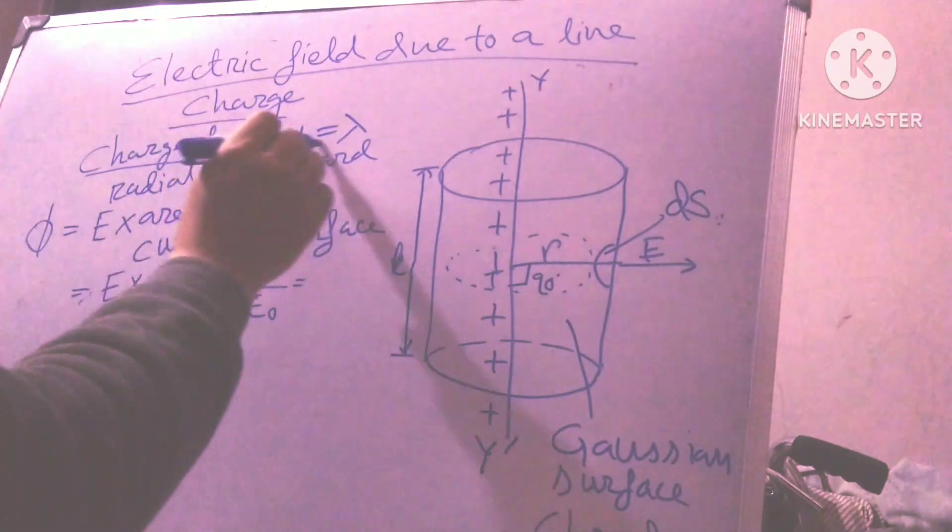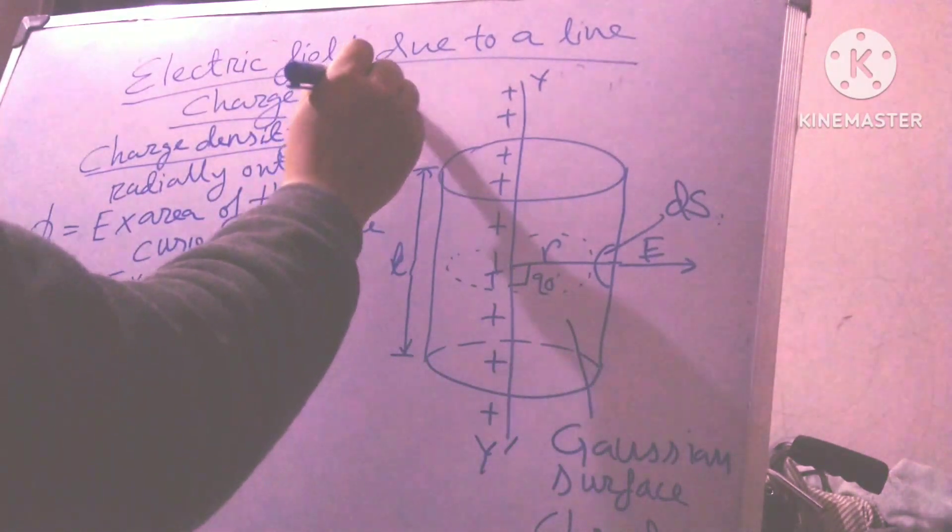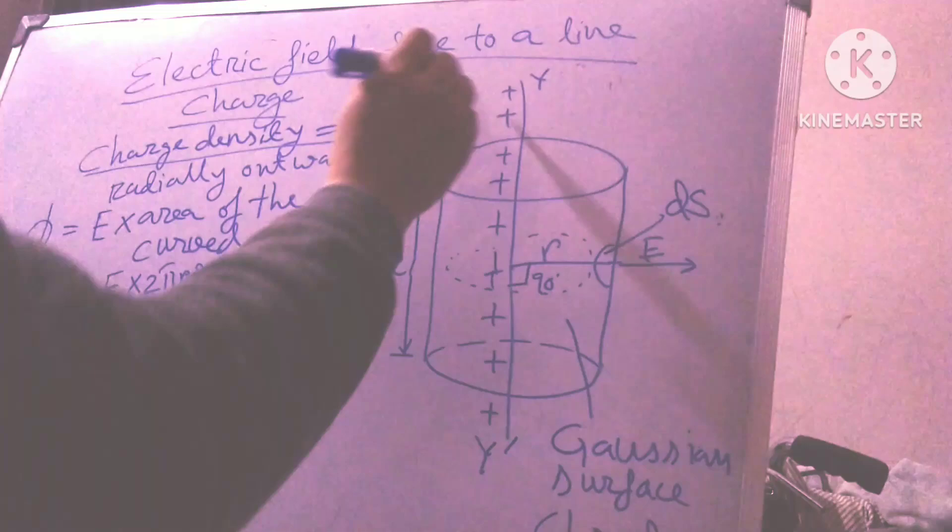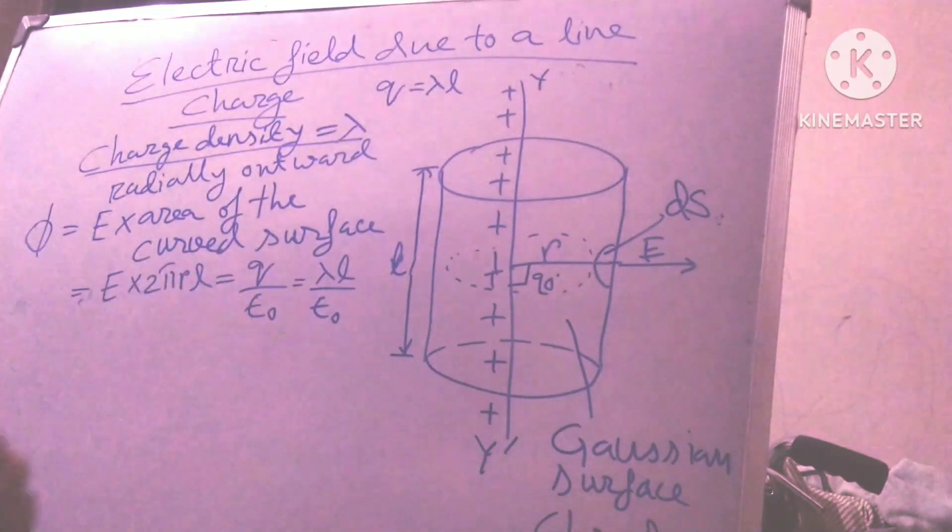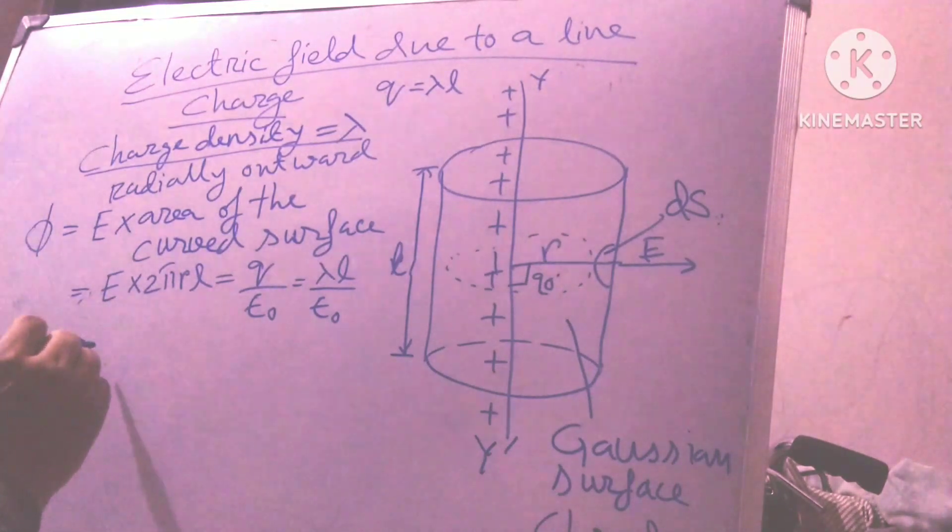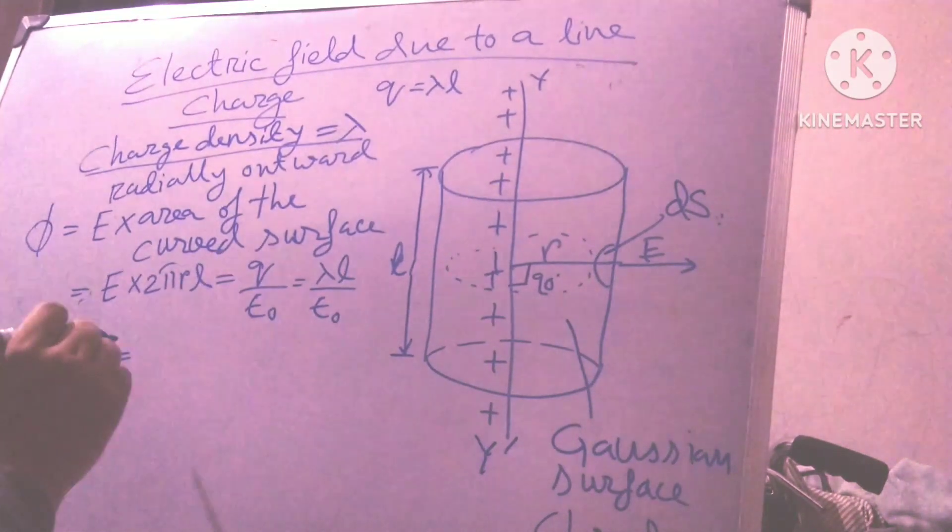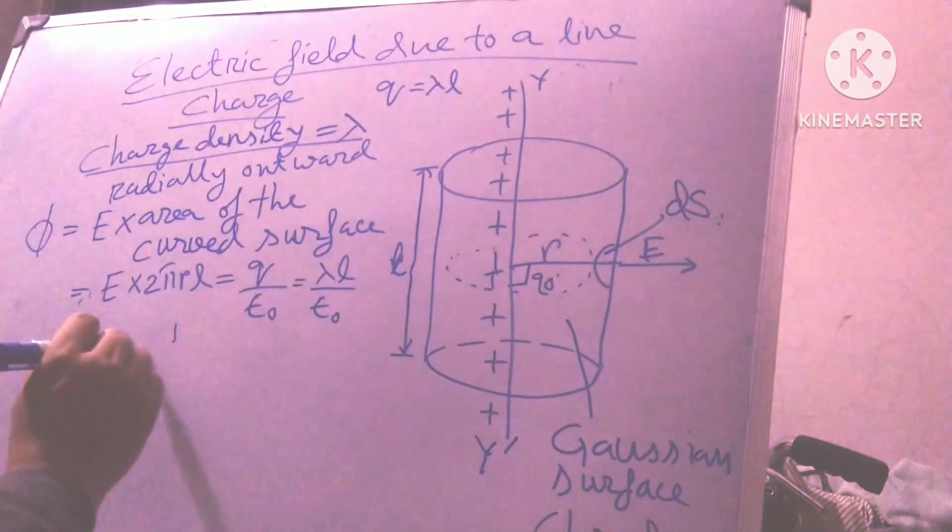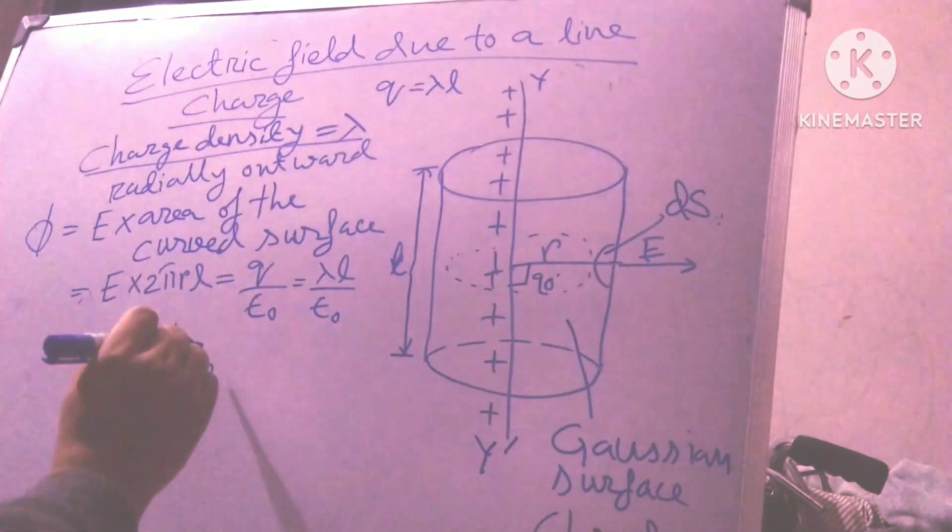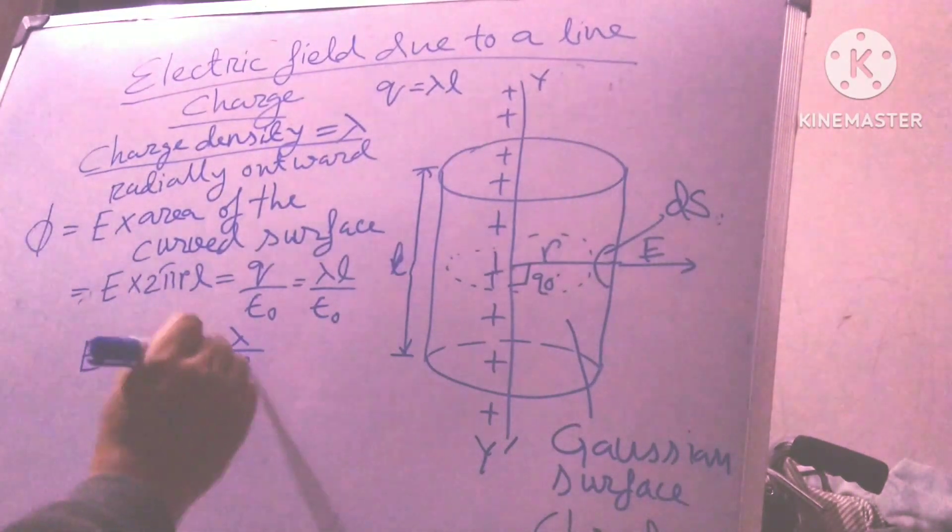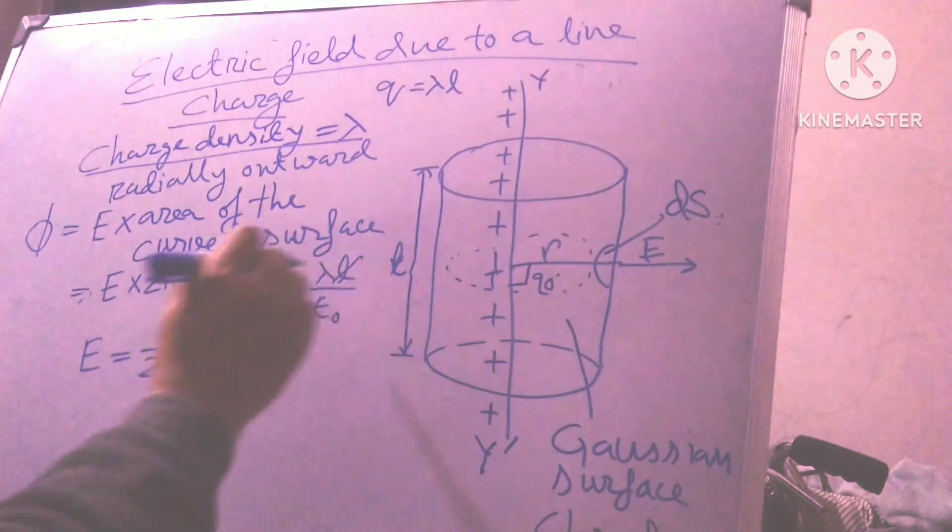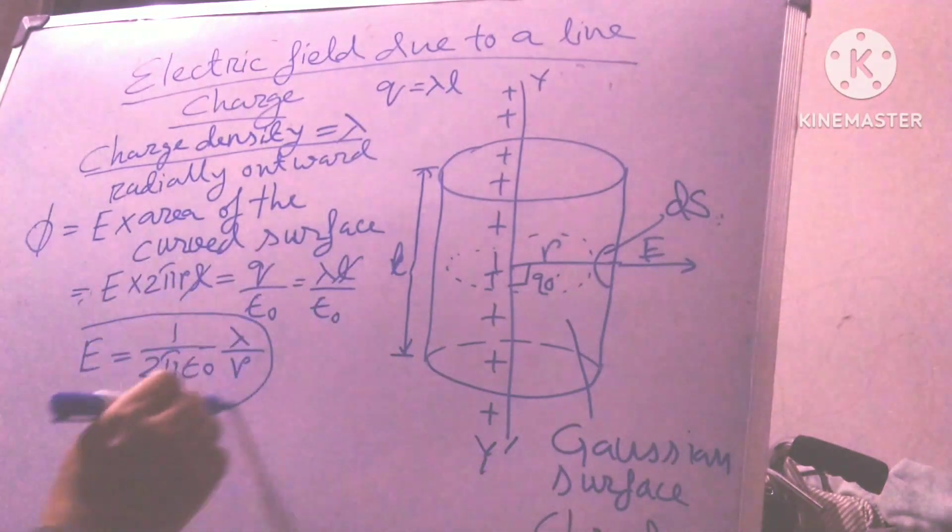So total q is equal to lambda l. So lambda l divided by epsilon 0. And phi is equal to, so we get E equals to 1 by 2 pi epsilon 0 lambda divided by r. So simple calculation, friends. LL cut and you get this is my electric field.